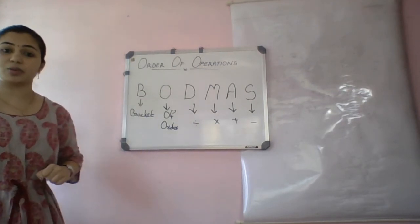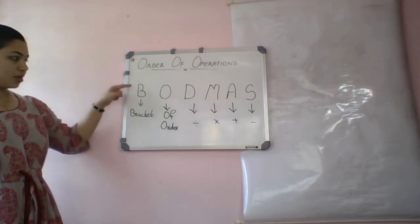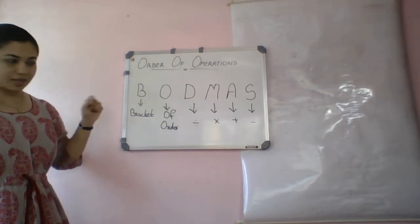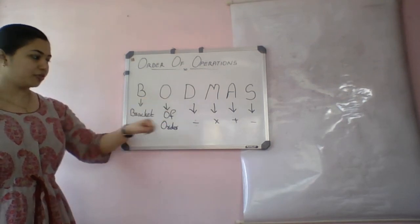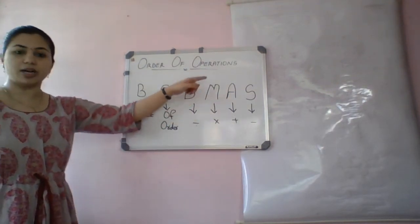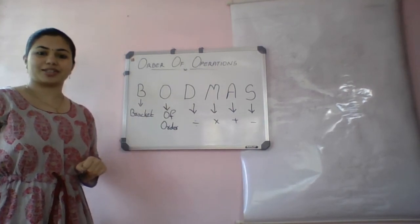And what is that order? First one is brackets. Second one is of or order, D for division, M for multiplication, A for addition and S for subtraction.